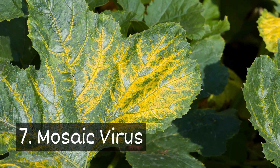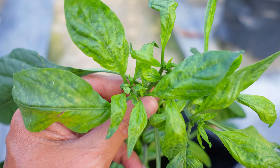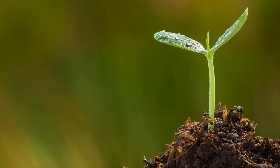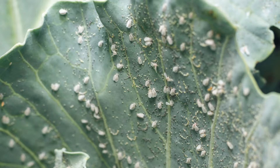Seven, mosaic virus. Plants infected with mosaic virus will develop spots or discoloration. Leaves may wrinkle and plants struggle to grow. Garden pests like whiteflies spread this disease.